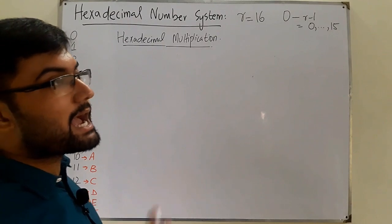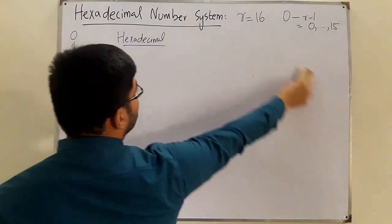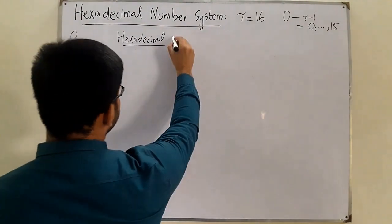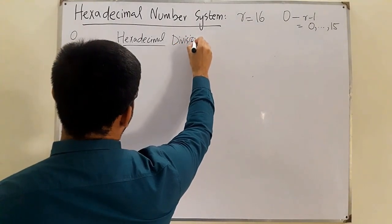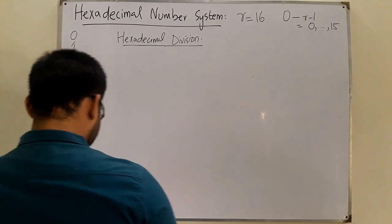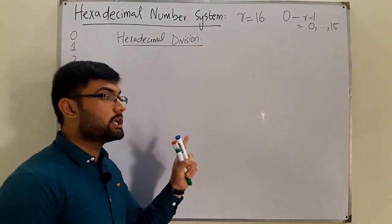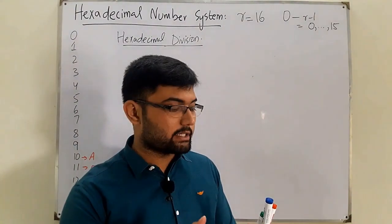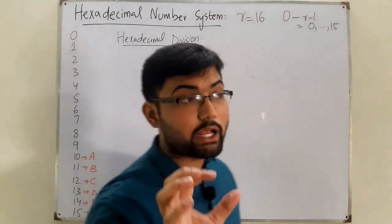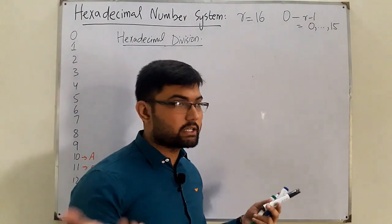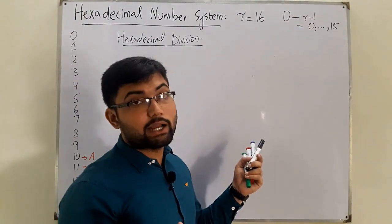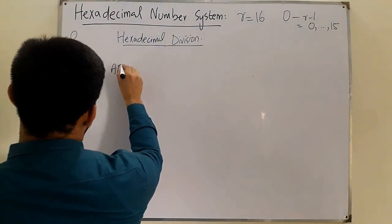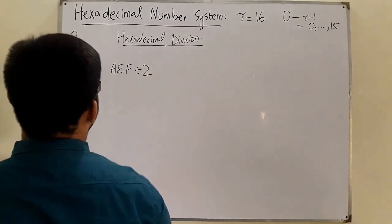The final operation is hexadecimal division. Before starting, you need to know how to convert numbers between decimal and hexadecimal. A simple example: AEF divided by 2.